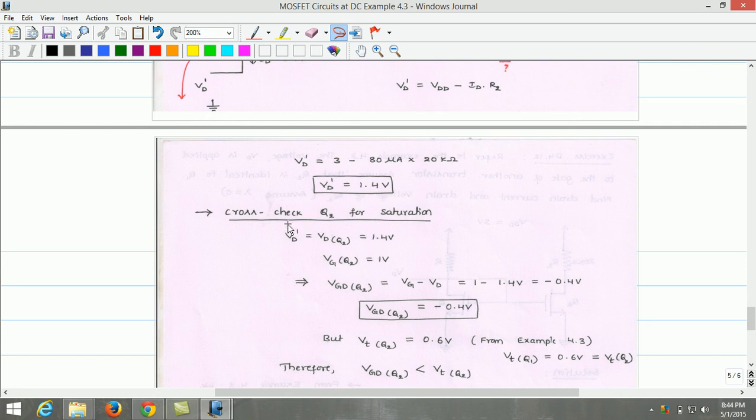Now, let us cross check whether Q2 is in saturation or not. Vd' which is also equal to Vd of Q2 equals 1.4 volts.